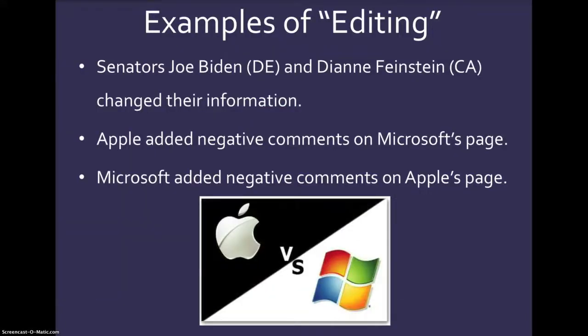Here are some examples of articles that have been edited on Wikipedia. Senators Joe Biden and Dianne Feinstein's staff both edited their Wikipedia page — that's back when Joe Biden was the Senator from Delaware; he's now the Vice President of the United States. And Apple added negative comments on Microsoft's Wikipedia page, and Microsoft added negative comments on Apple's Wikipedia page.